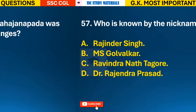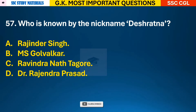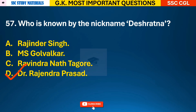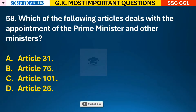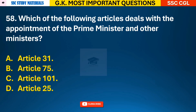Question 57: Who is known by the nickname Deshratna? Answer D - it was Dr. Rajendra Prasad who was known as Deshratna. Question 58: Which of the following articles deals with the appointment of the Prime Minister and other ministers? Answer B - Article 75.